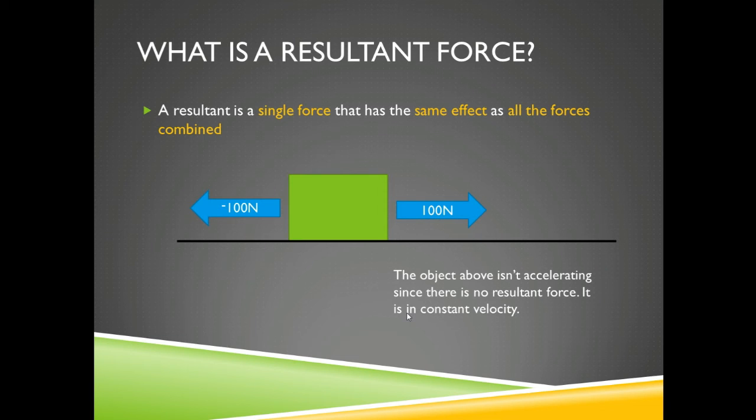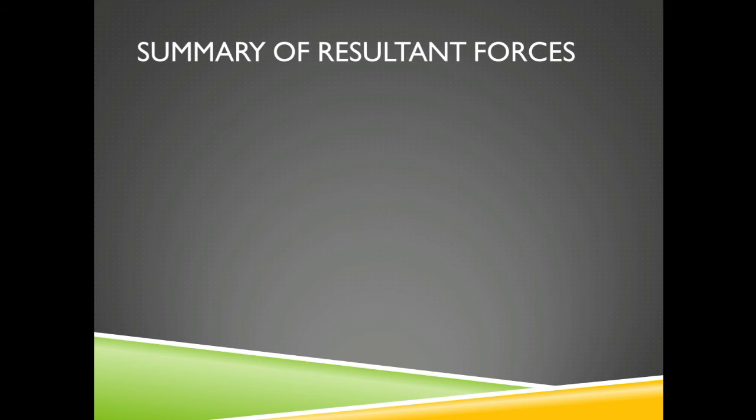It is travelling in constant velocity. So this object would be travelling, for instance, either 0 meters per second or even 5 meters per second. Who knows what the previous thing was? So this is very key. Whenever there is no resultant force, the object will never ever accelerate. However, if there is, the object will accelerate. And this is a summary of resultant forces.